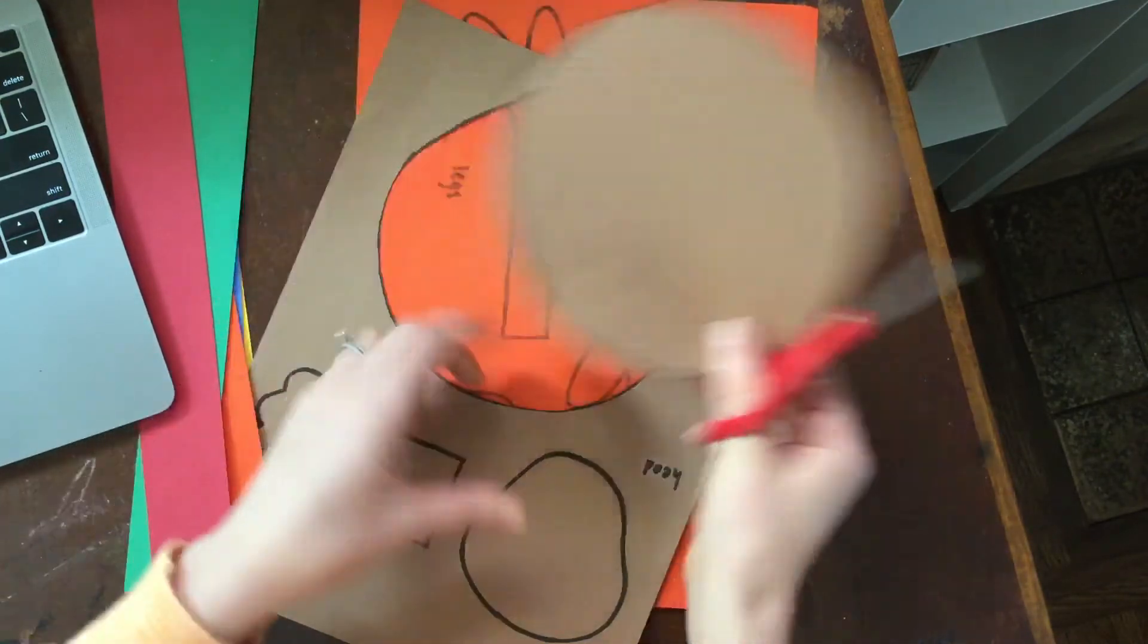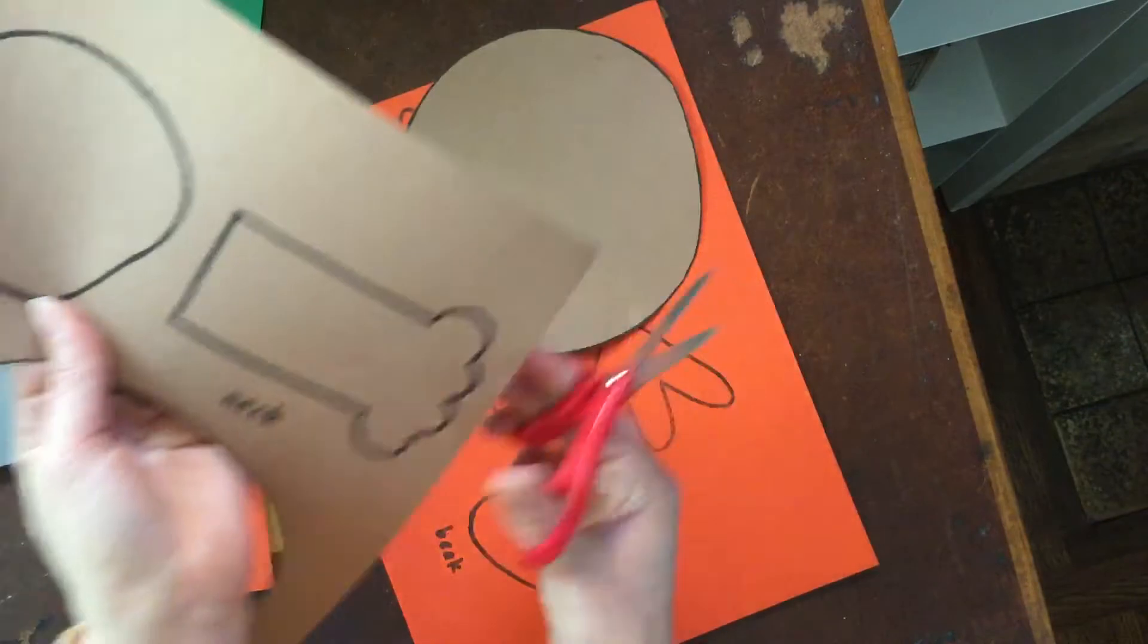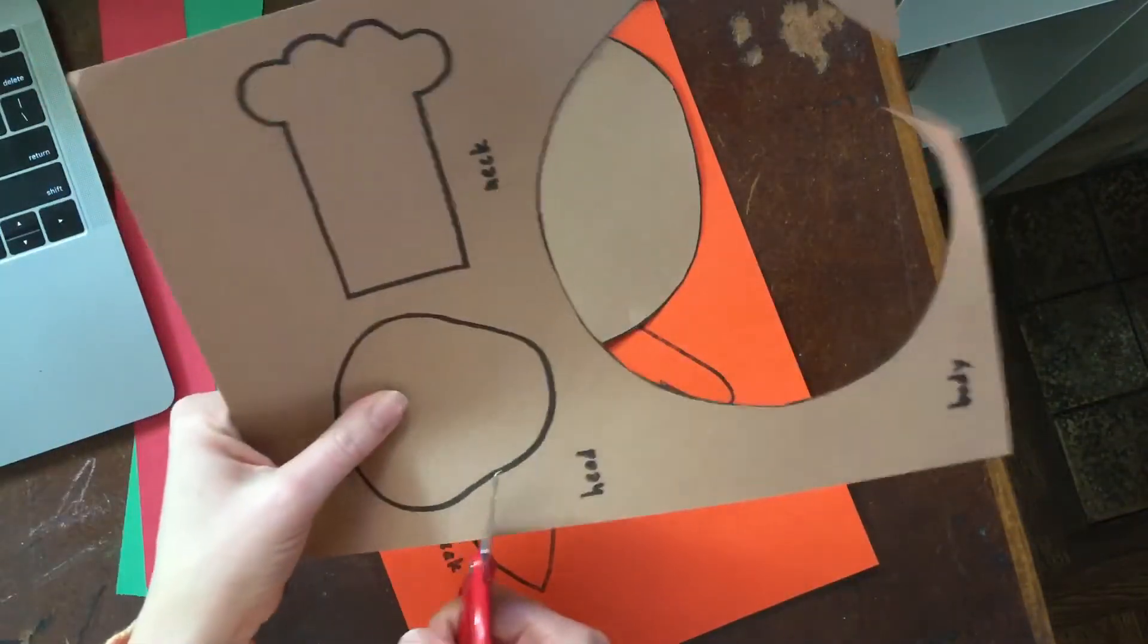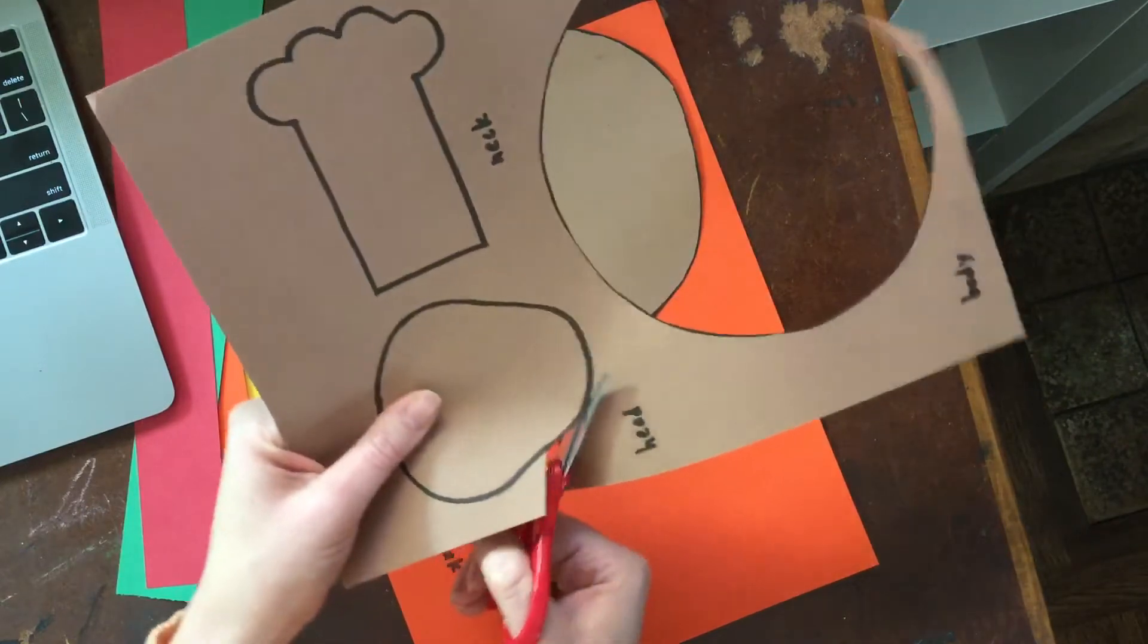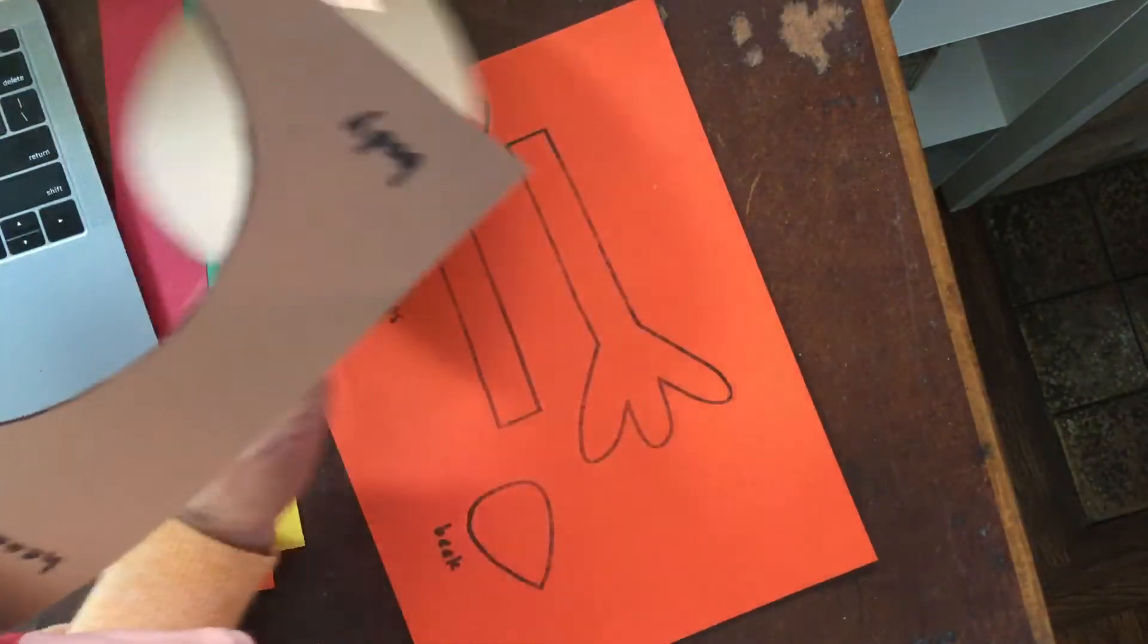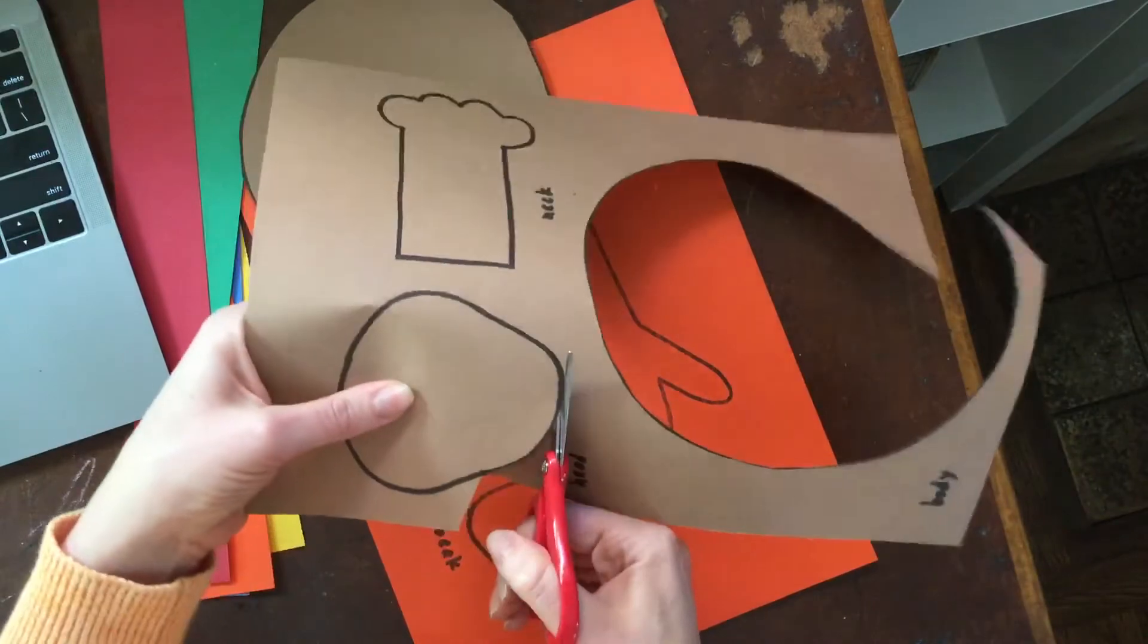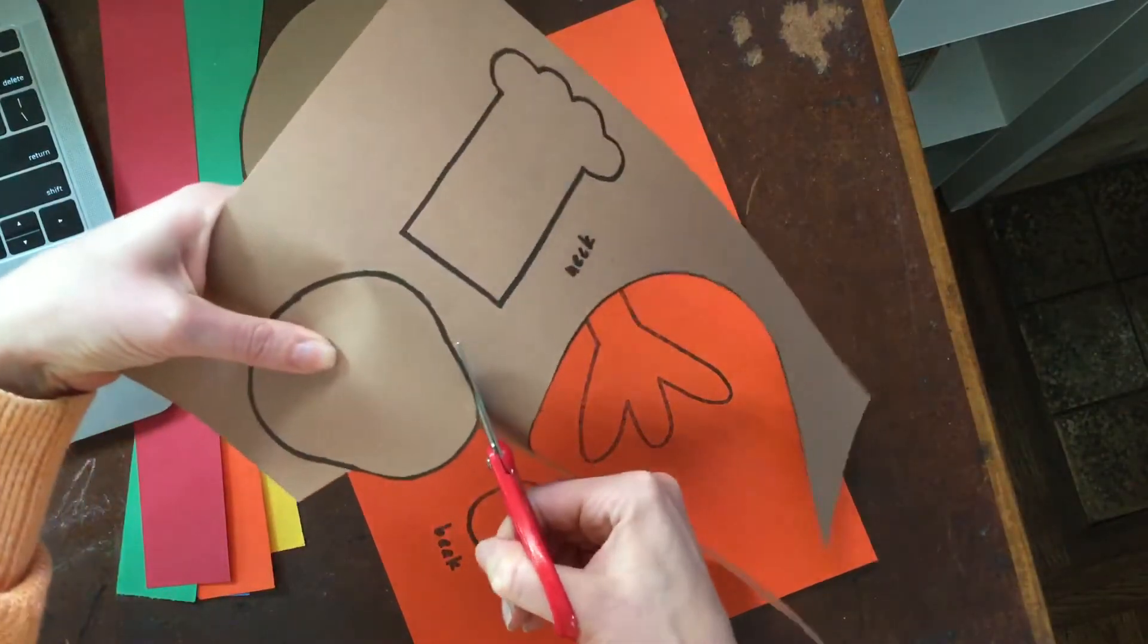Okay, circles are kind of the hardest thing to cut. Well I guess things with lots and lots of corners are kind of hard too. Like these feet are going to be a little tricky but we just do our best. Okay this is the head.